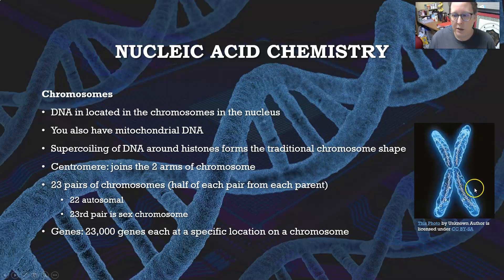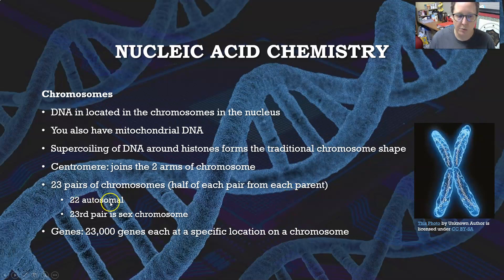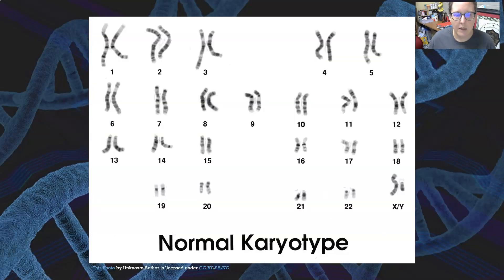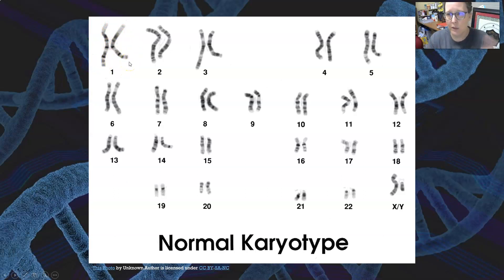The centromeres are the middle portion that join the two arms of the chromosome. You have 23 pairs of chromosomes — half of each pair comes from each parent. You have 22 autosomal pairs and the 23rd pair is the sex chromosome, for 46 chromosomes total. You have approximately 23,000 genes, each at a specific location on a chromosome. This is a representation of a karyotype — you see all 22 pairs with the sex chromosome pair, and for every pair you get one from mom and one from dad.